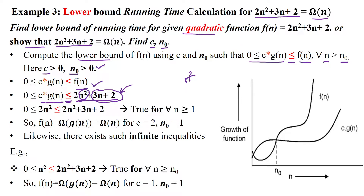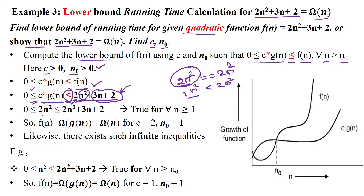We are taking the n² term, for which c·g(n) should be less than or equal to f(n). The equality coefficient is 2, so 2n² equals 2n², and 1n² is less than 2n². So we can take 2n² or 1n². It should be always greater than or equal to 0 — it should not be a negative number. So we will take c·g(n) equal to 2n².